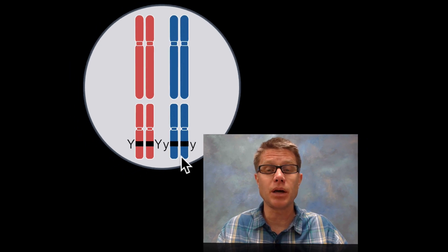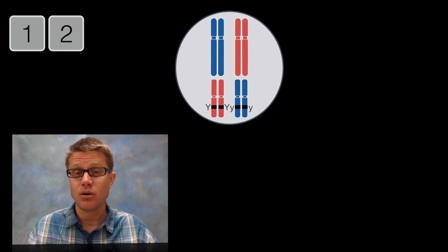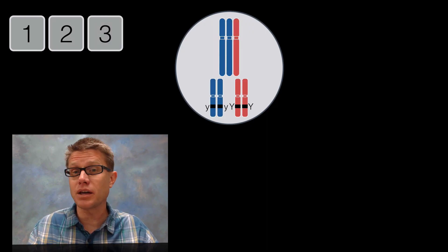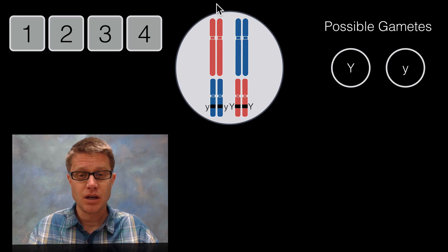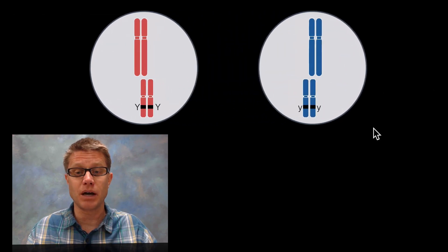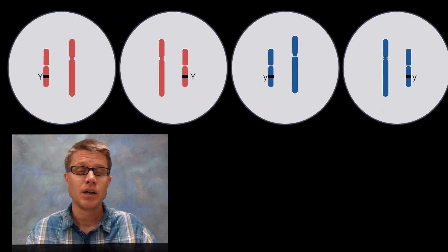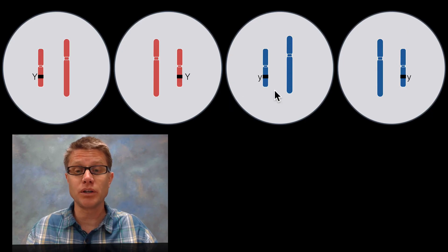During meiosis, chromosomes are going to independently orient themselves at the metaphase plate. They could line up in four different arrangements, but it doesn't really matter how they orient themselves — we're still seeing the same four possible gametes, and two of them are going to be exactly the same. Each sex cell is either going to get a big Y or it's going to get a little y. After one division and then another division, you produce four cells in meiosis, but two of those are going to have the exact same genes and chromosomes. So we really only have two alternatives: big Y or little y.